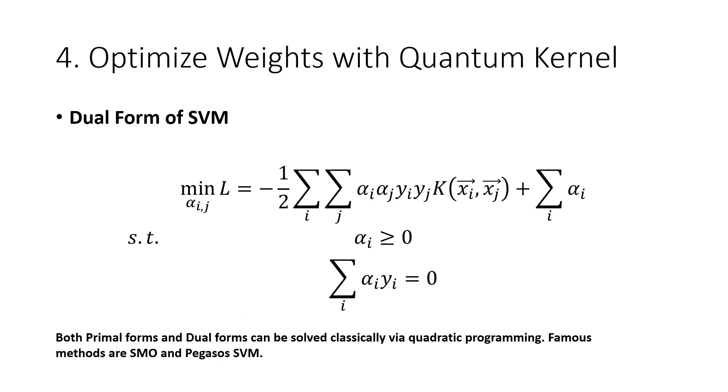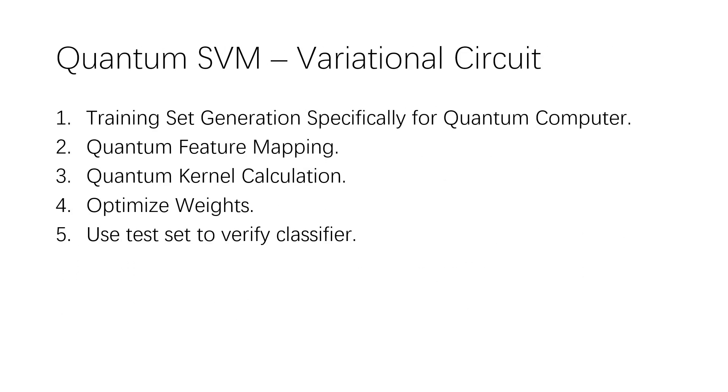Then, like the classical SVM, we optimize the weights to minimize the loss function. The second approach is to use what is called a quantum variational algorithm solver, or VQE for short.